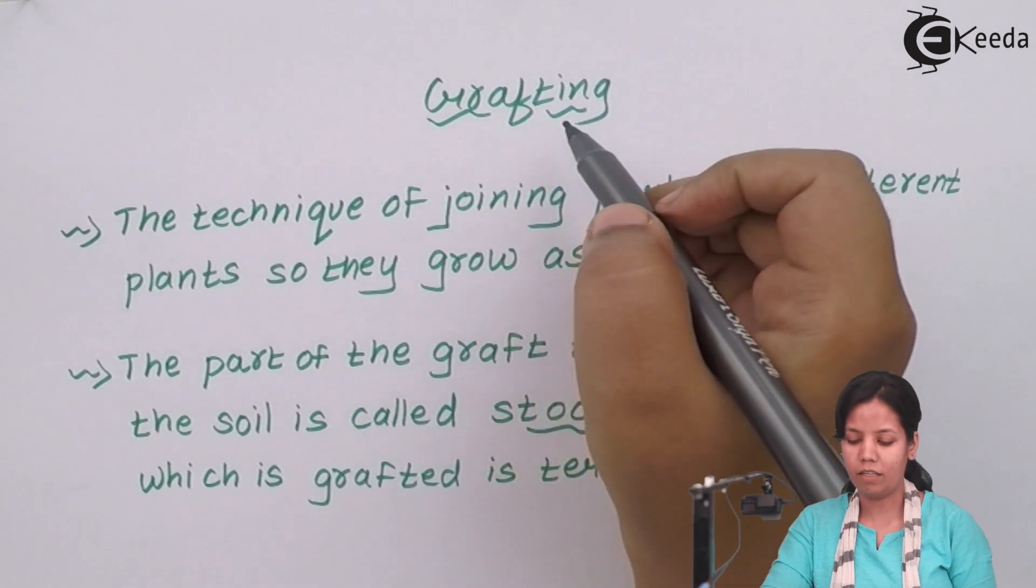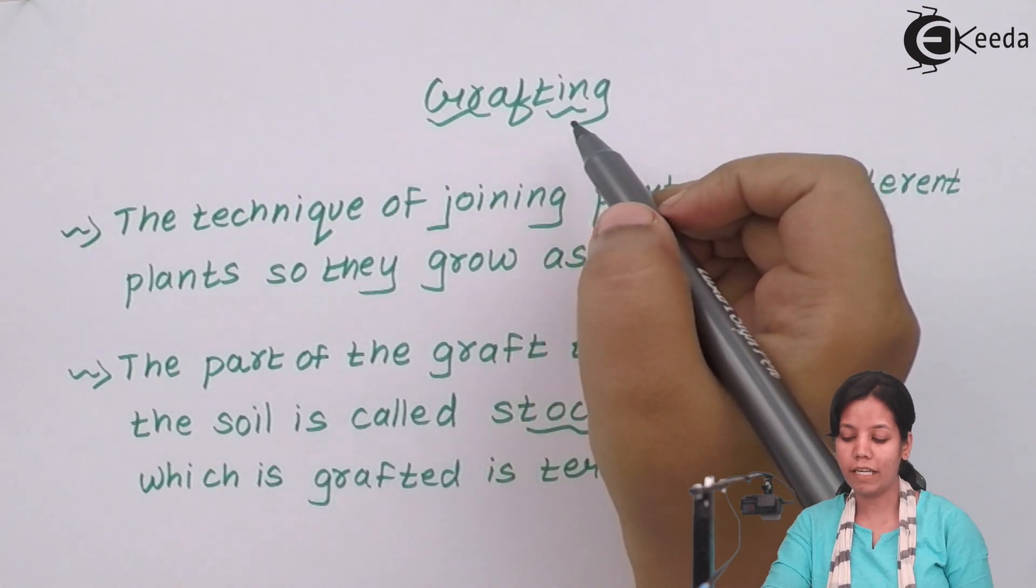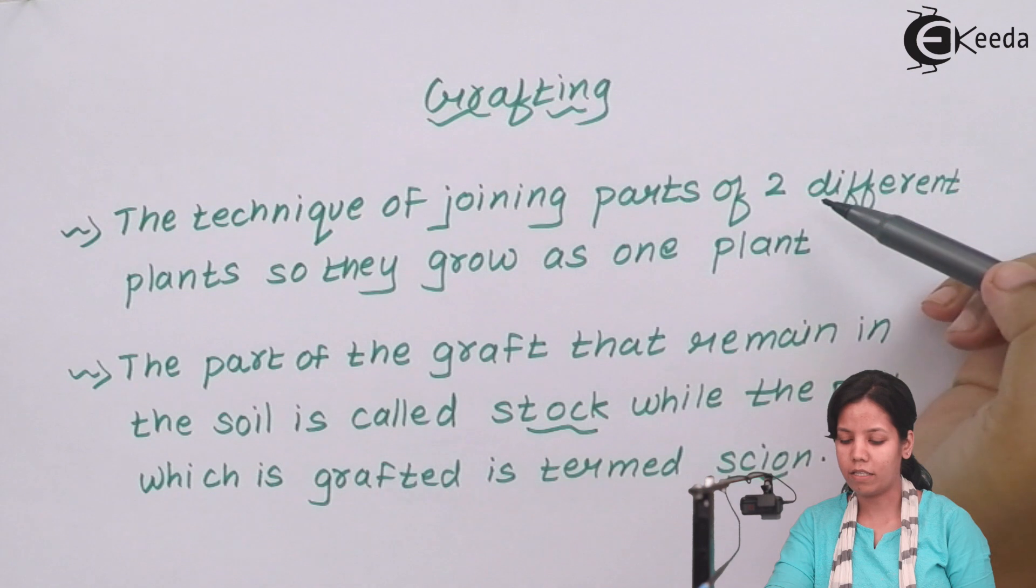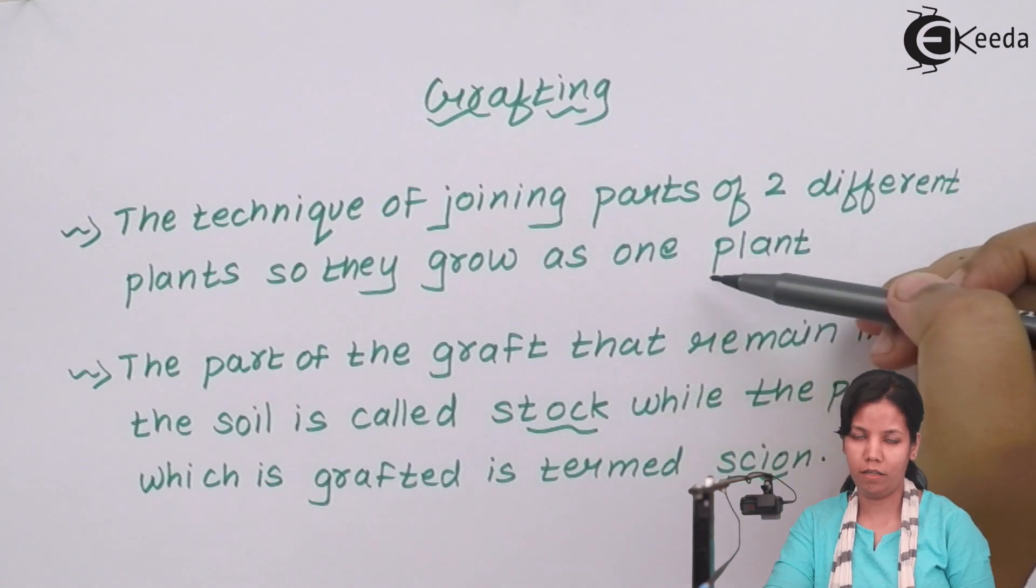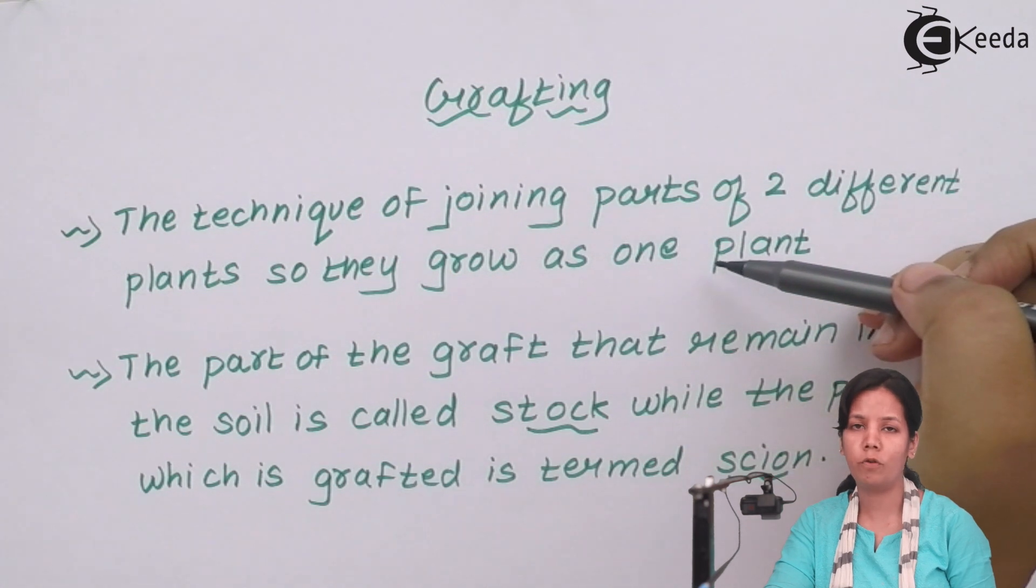Grafting is a process or a technique of joining two parts or two different parts of a plant so that they grow as one plant. Remember the mixing of two different rose varieties?